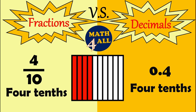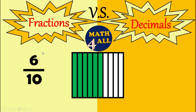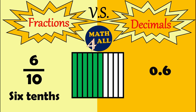Let's take another example. Here we have one square broken into ten equal parts. You have just one, two, three, four, five, and six — six parts out of ten. So in the fraction you write six over ten, and you can read it as six tenths. Now in the decimal form you will write zero point six, and you can also read it as six tenths.